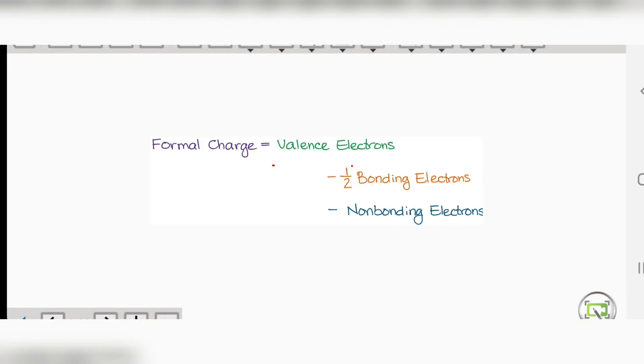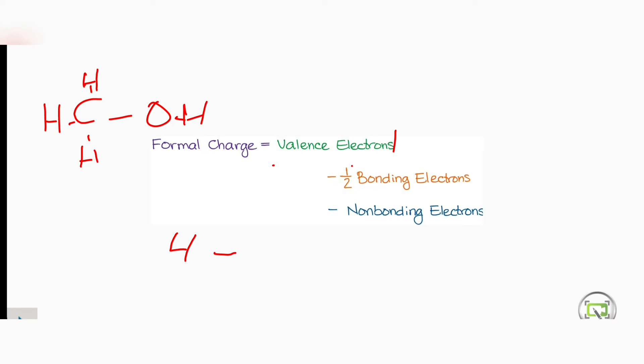Here I again draw the structure. Now you know how we can find the formal charges. Choose the carbon. The valence electrons of carbon are four, subtracted by the bonding electrons. How much bonding electrons are on carbon? It is making four bonds, so four into two equals eight, and eight will be divided by two. The non-bonding electrons of carbon are zero. So 4 minus 4 equals 0. This is the surety that our structure is correct.